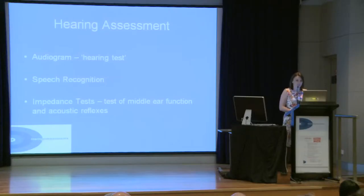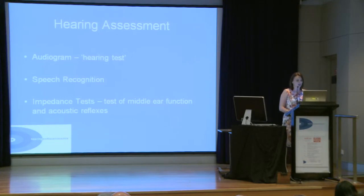When we do a hearing assessment, there are normally three components. The first component is an audiogram, which is a hearing test. We do some speech recognition testing, and we also do impedance testing, which tells us how well your middle ear is functioning. There are two parts of that: the first is called a tympanogram, which measures how well your eardrum moves in response to a pressure change, and the second part is acoustic reflexes that looks at the reflex pathway.